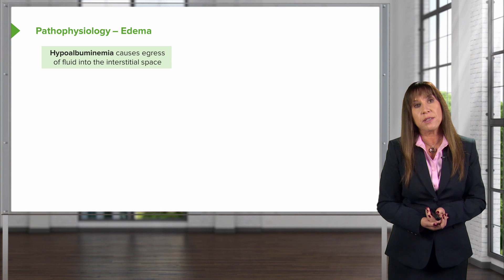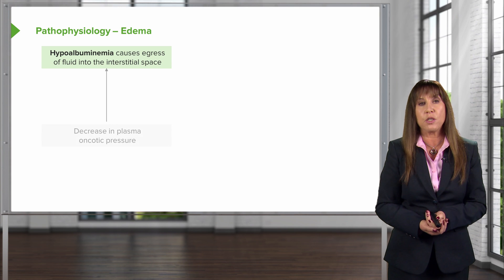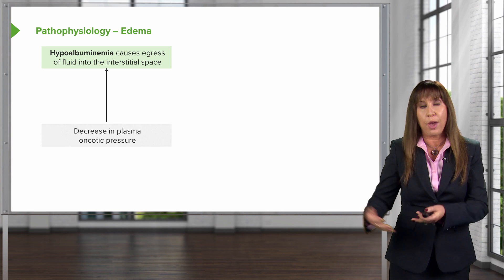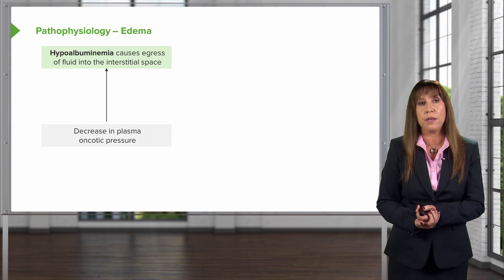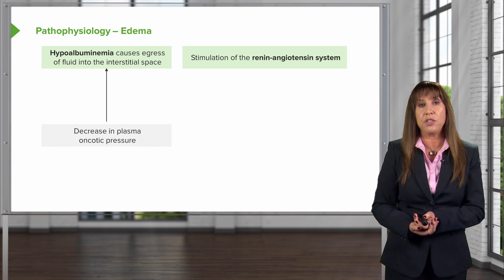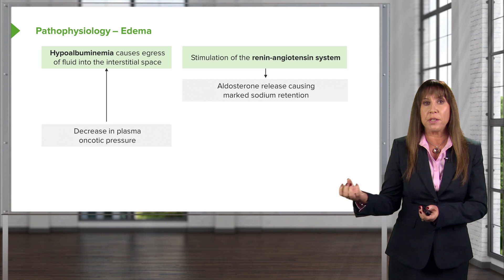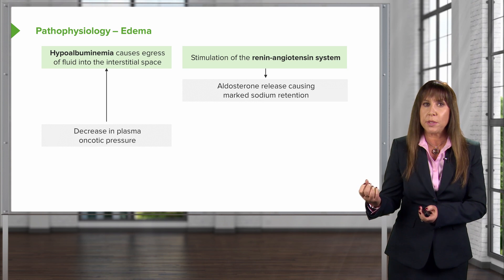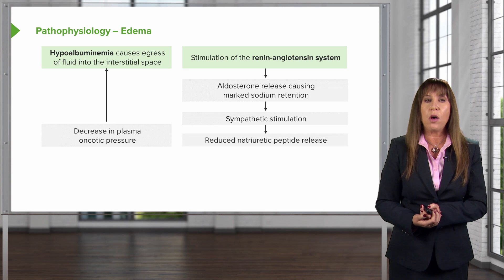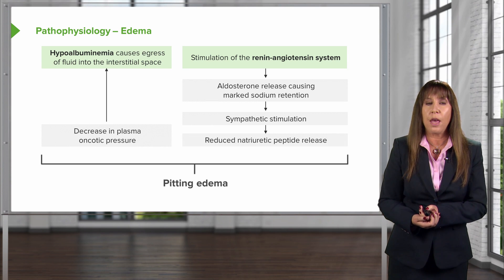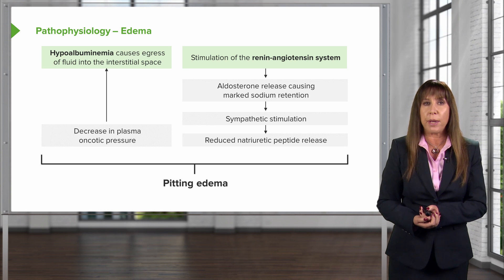Edema is consequent to the hypoalbuminemia. That causes egress of fluid into the interstitial space because we have a decrease in plasma oncotic pressure — we don't have albumin to hold vascular fluid in the vascular space. We also get stimulation of the renin-angiotensin system, leading to aldosterone release causing marked sodium retention at the principal cell. We have sympathetic stimulation increasing sodium retention and reduced natriuretic peptide release. All of this together causes that soft, pitting, dependent edema we see in our patients.